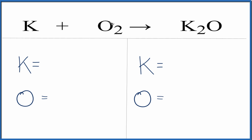In this equation, we have potassium plus oxygen gas that gives us potassium oxide.